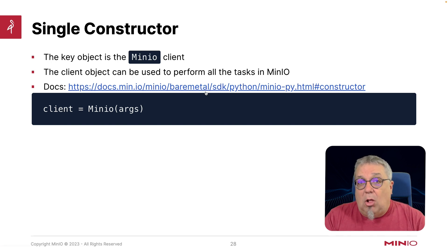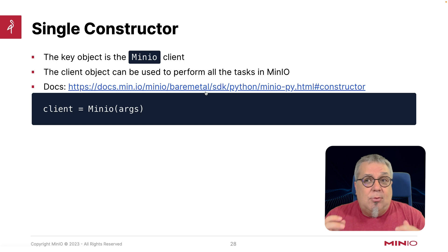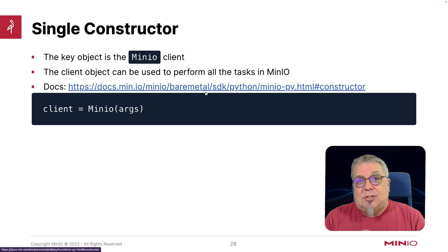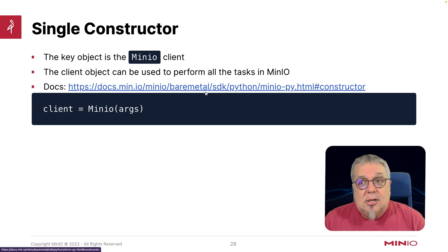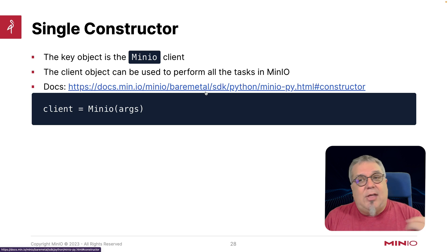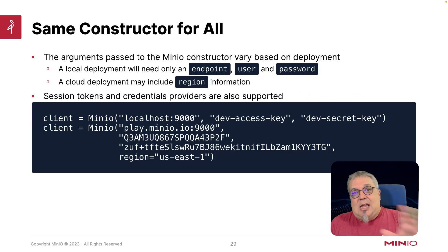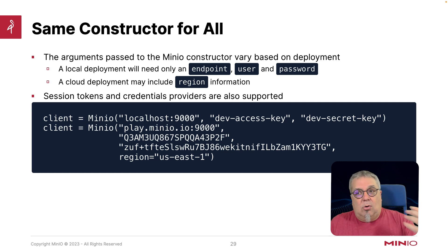The key object to all of this is the MinIO client object, and the way that you build this is with a very simple constructor. The constructor takes various arguments like the endpoint and the keys that you need to actually connect, but it's very simple to use. Once I have that client, that's where I run all my methods from. It's the same constructor whether I'm talking about local or a remote host.